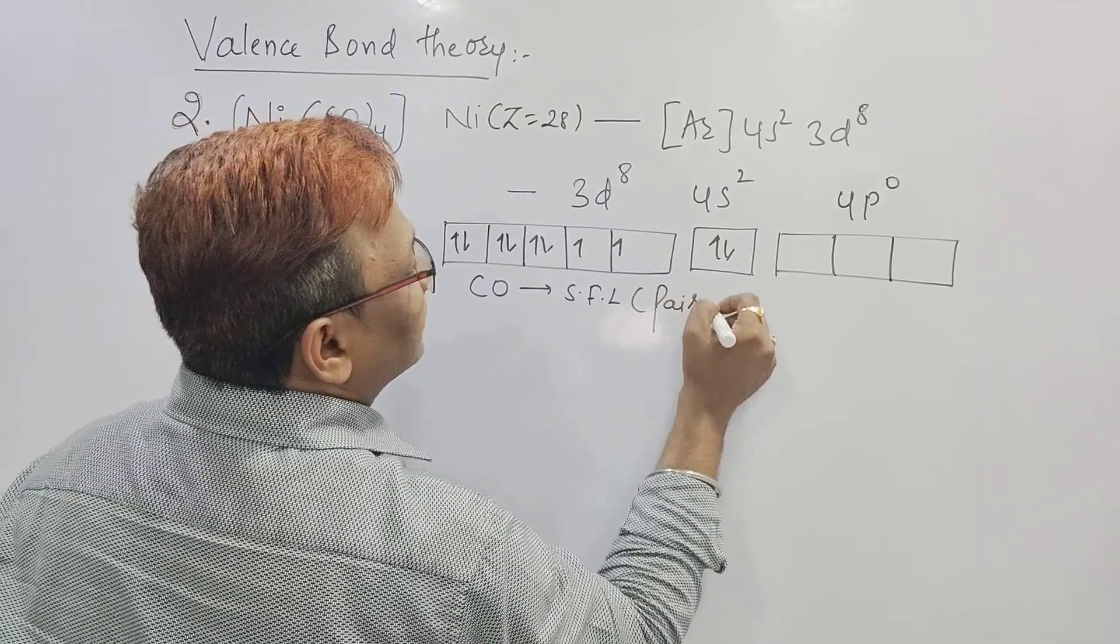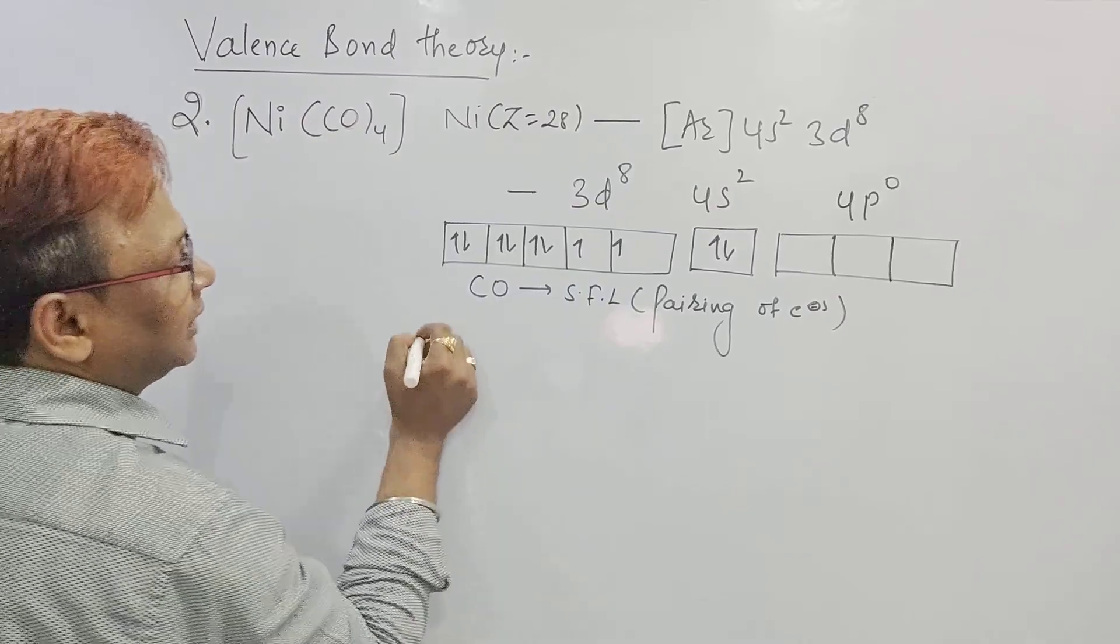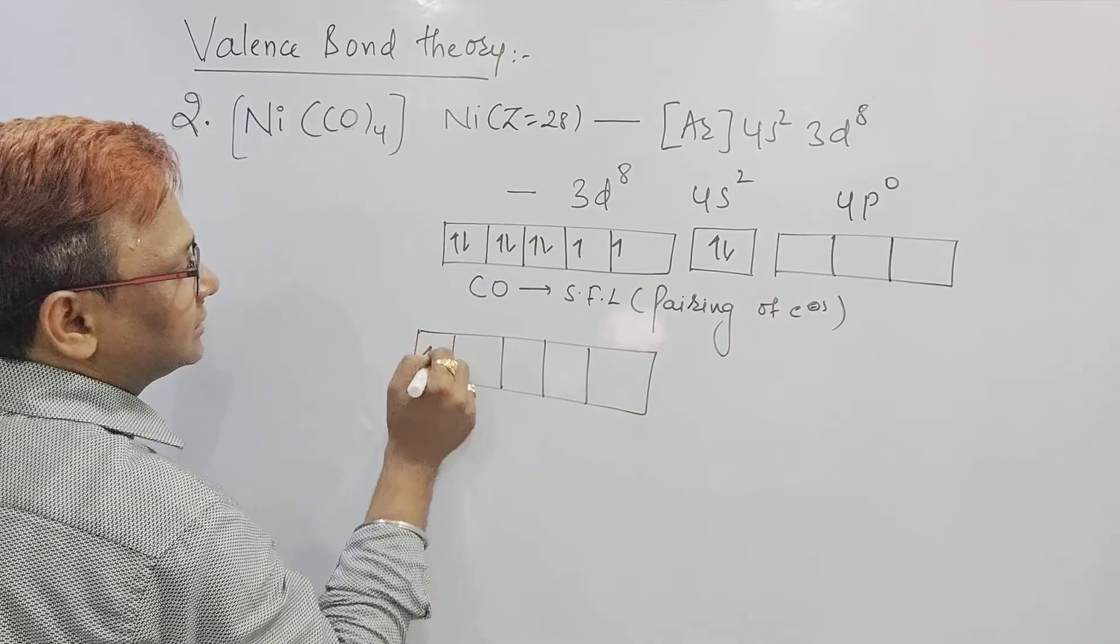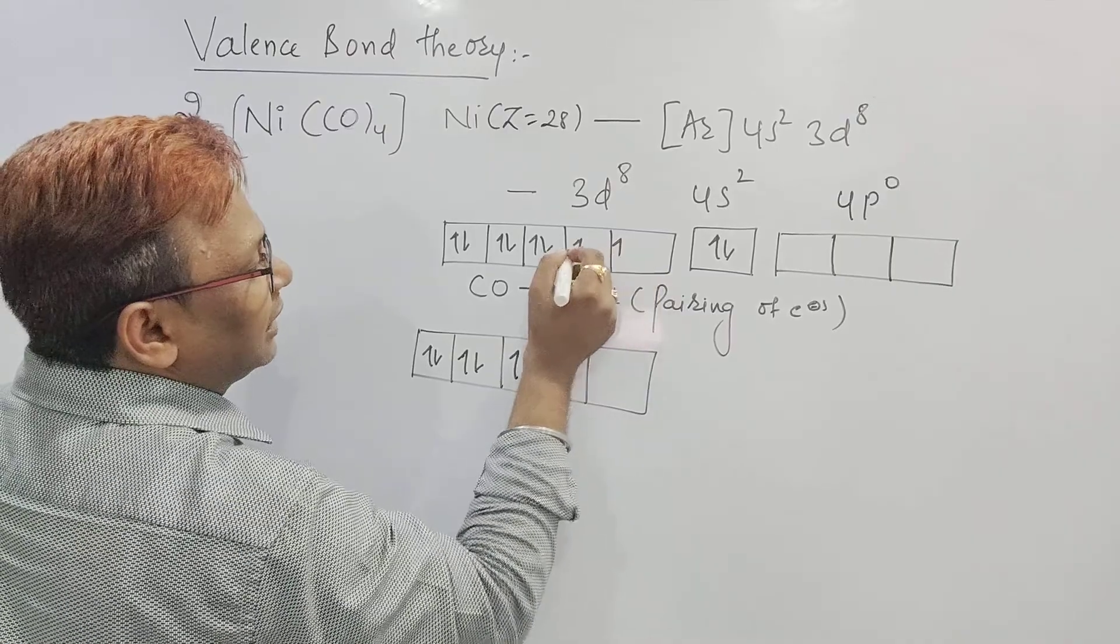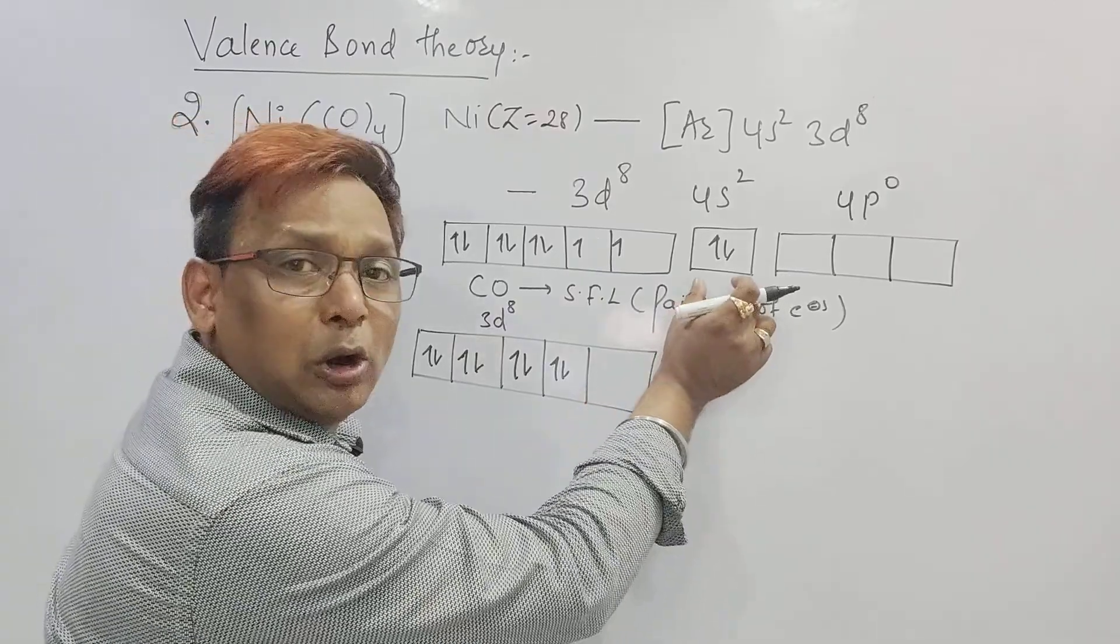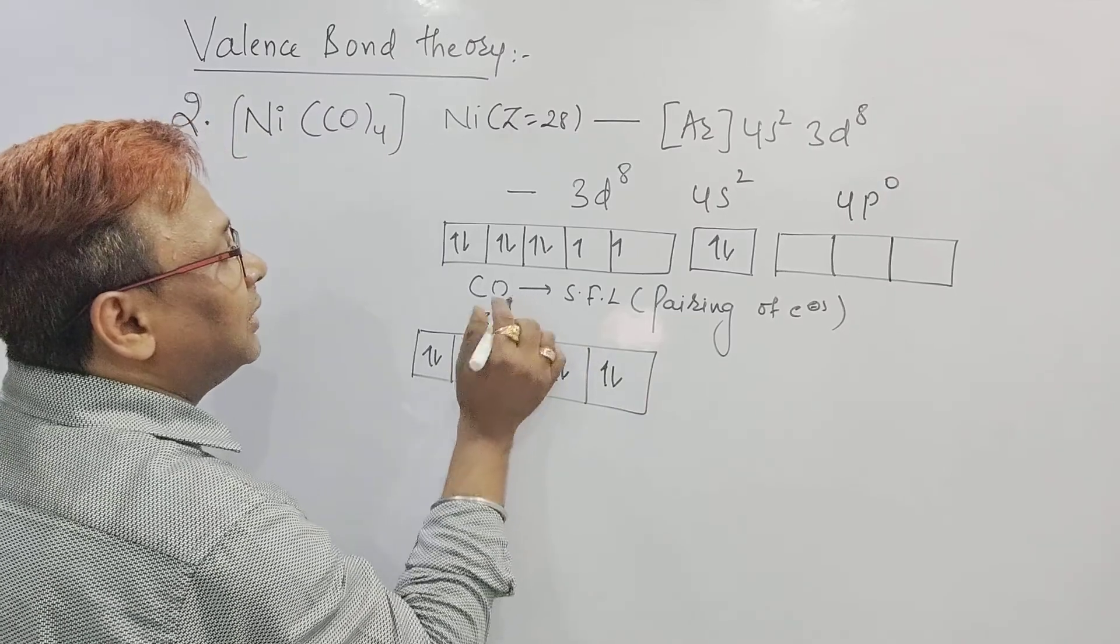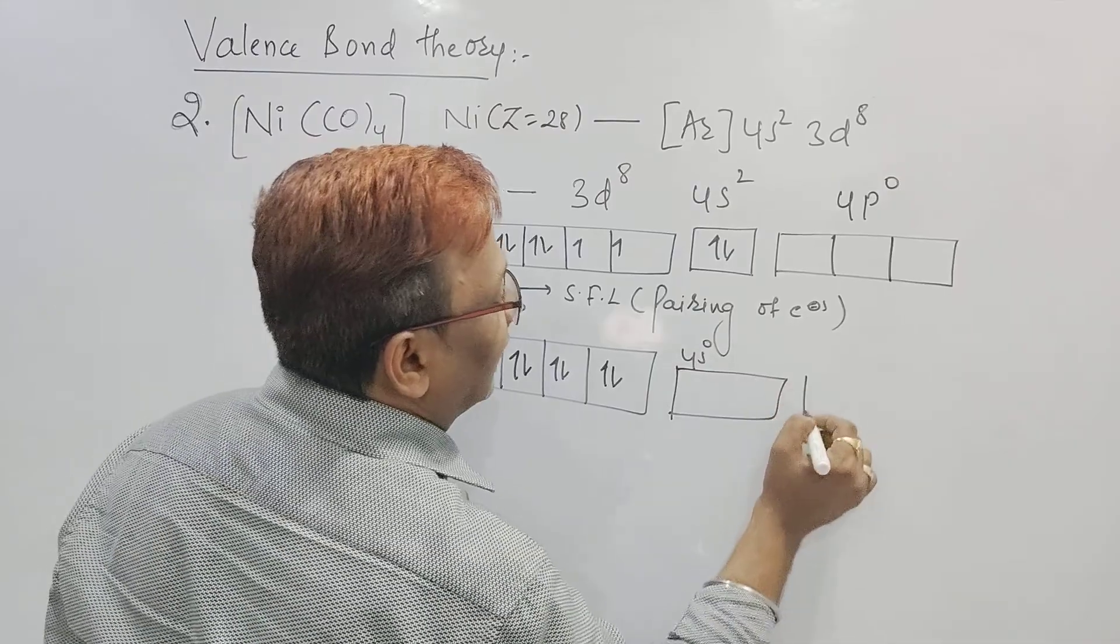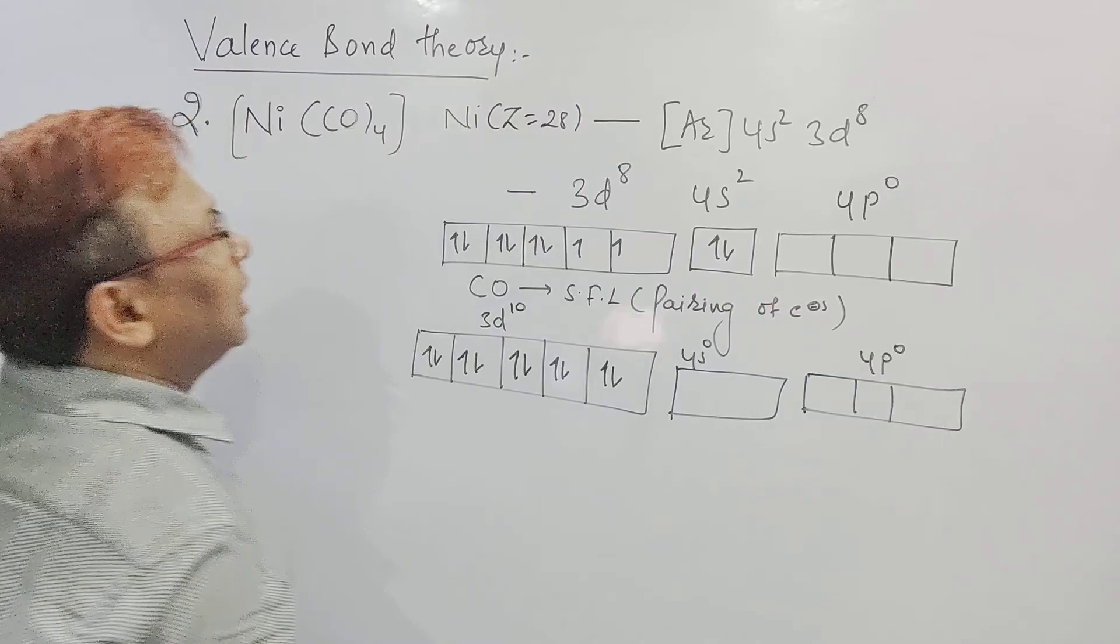And we know that CO is a strong field ligand. So pairing of electrons takes place. As the pairing of electrons takes place, your 3d which is given there can be written in this way. This 2 as it is, these 2 as it is, this 2 as it is. This will come inside. It is as it is. Means already 3d8 over. 2 electrons which is present in the 4s will also come inside. And 3d8 becomes 3d10, 4s2 becomes 4s0, and 4p will be as it is like 4p0.